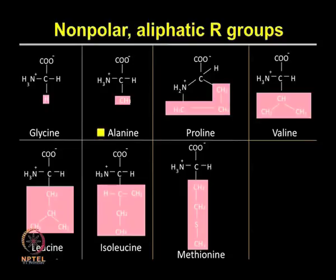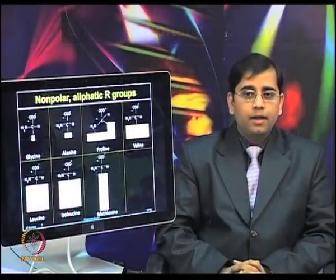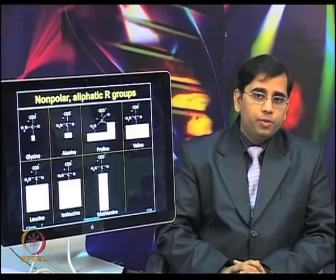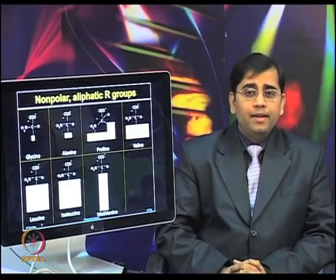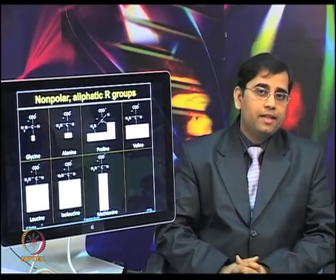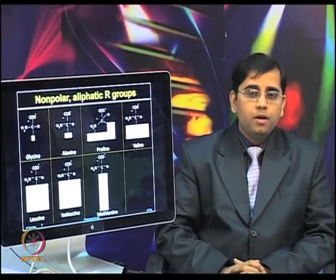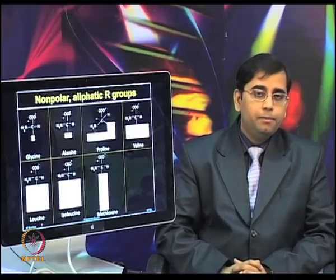Next is alanine, which contains a methyl group. Proline has aliphatic side chains and a very unique feature: it has no free amino group, and its side chain is bonded to both the nitrogen and alpha carbon atoms. The ring structure provides more conformational restrictions, and therefore proline plays a very crucial role with unique properties in many functions.